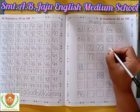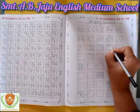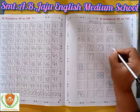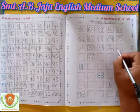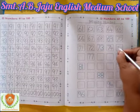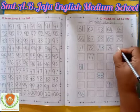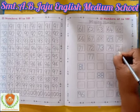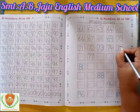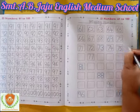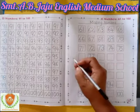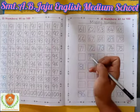After 73, which number will become? 74. After 74, which number will become? 75. After 75 — 76.